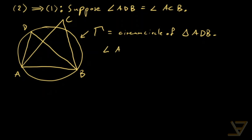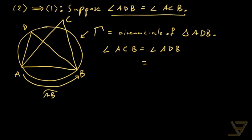We know that angle ACB is equal to angle ADB by assumption, and that equals arc AB over two. Since C is subtended by the same arc AB, we find that C in fact lies on the circle — C is a point on gamma. We're using the converse of the inscribed angle theorem here.